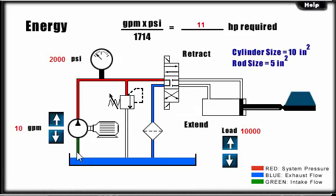This learning lab will demonstrate the effect of flow and pressure requirements on theoretical input horsepower required. Clicking on the arrows labeled GPM will increase or decrease the pump flow output, while clicking on the arrows labeled load will increase or decrease the load on the cylinder. Clicking on the extend or retract will shift the valve and operate the circuit. Observe the changes in horsepower requirements.